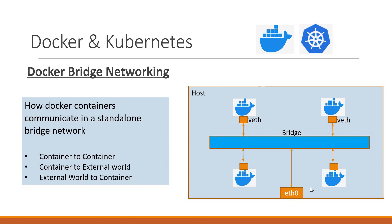This bridge will be connected to the Ethernet interface of the host. We can also create user-defined bridge networks. When we create a container, if we don't specify any bridge network name, then it will be connected to the default bridge network. If we specify a bridge network name, the container will be connected to that corresponding bridge network.